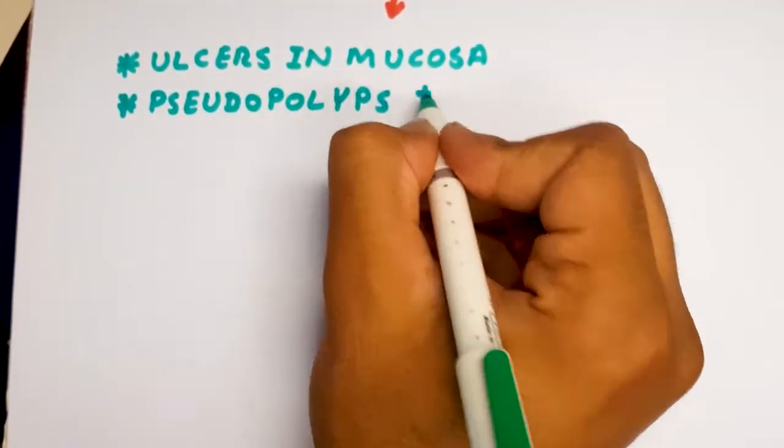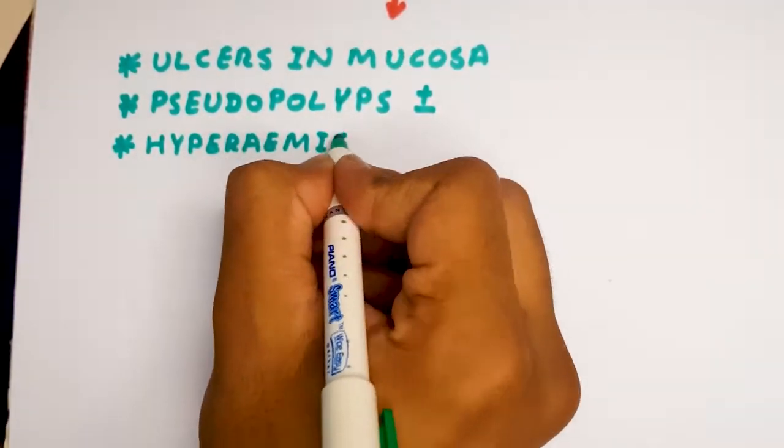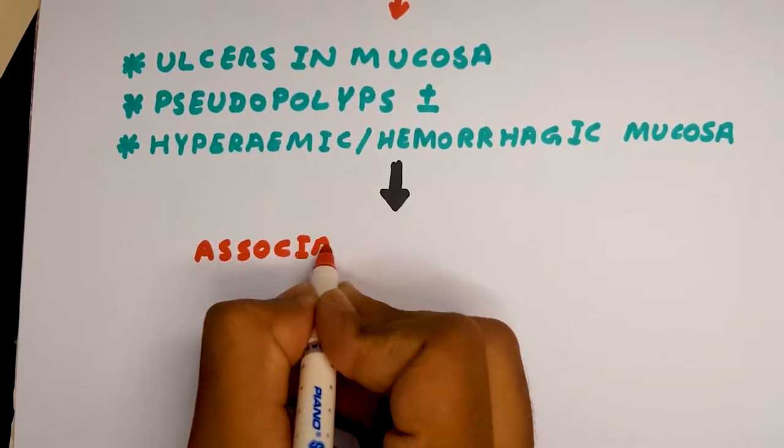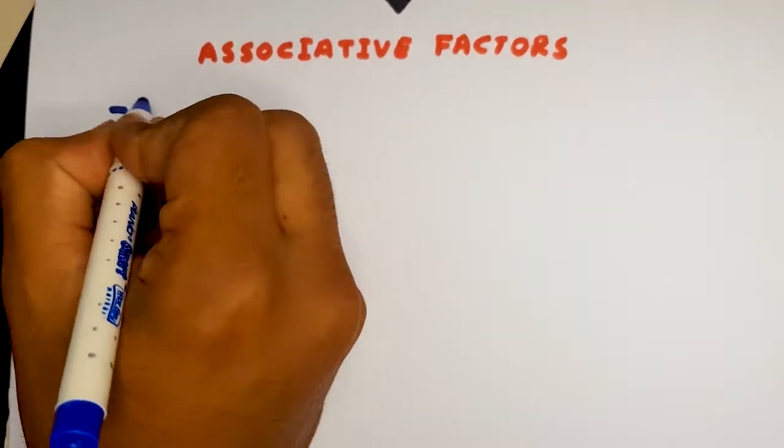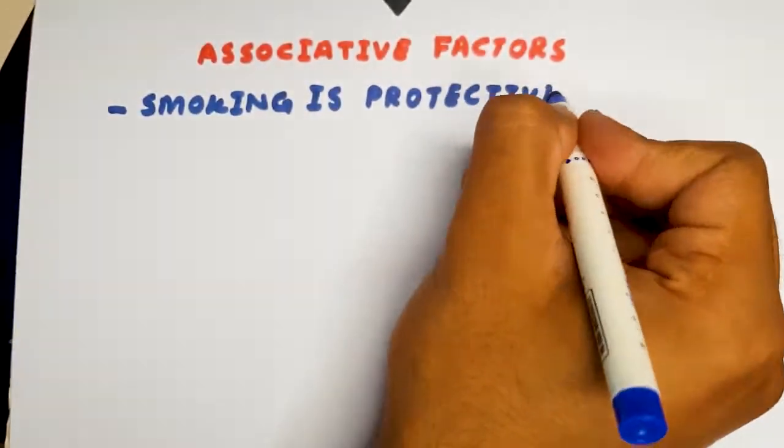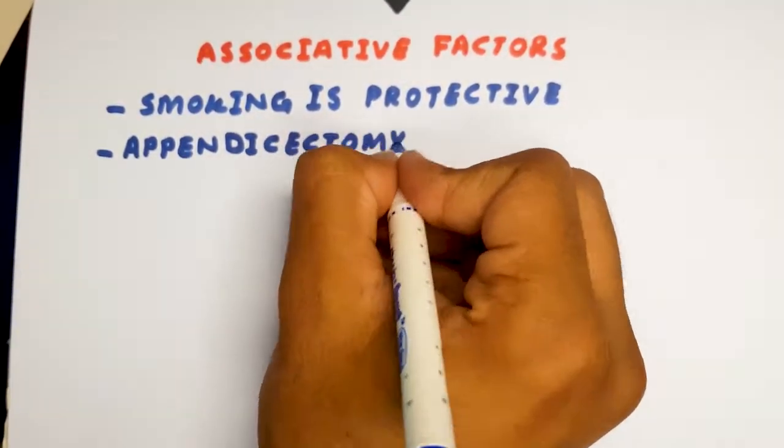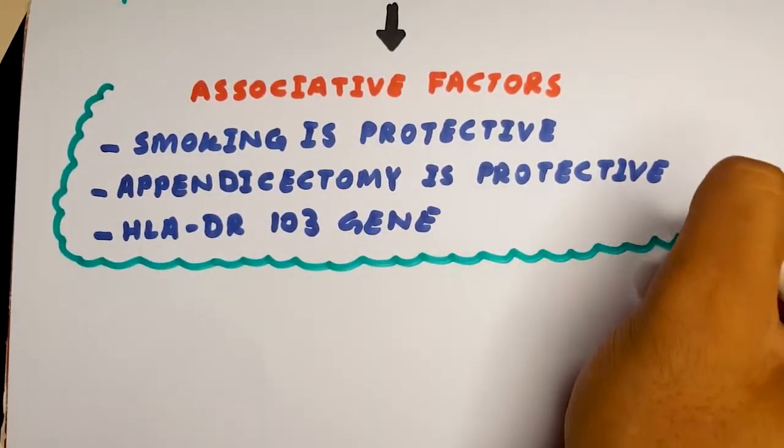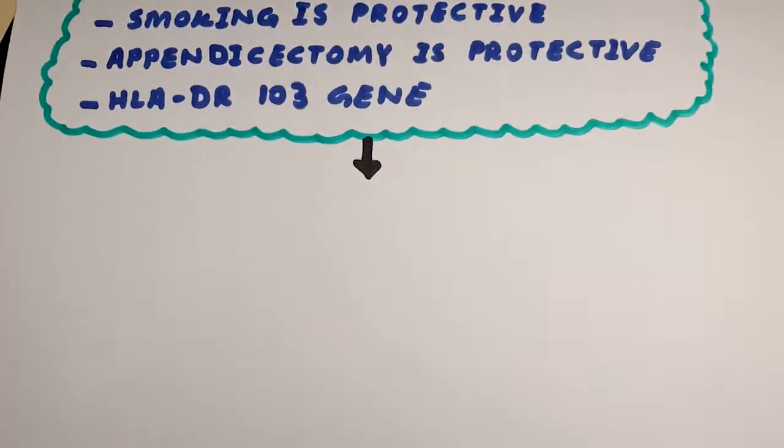There may or may not be pseudopolyps and it causes hyperemic and hemorrhagic mucosa. Associated factors are interesting because smoking is protective, getting an appendectomy is protective, and the HLA-DR103 gene is thought to be the main culprit behind this.